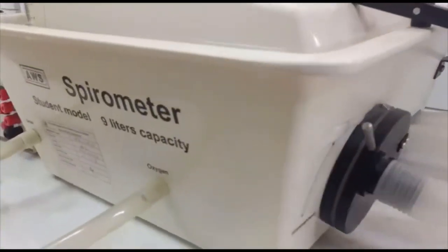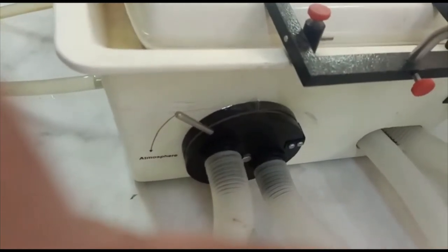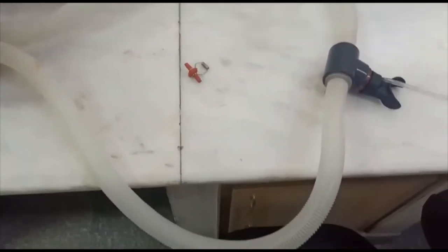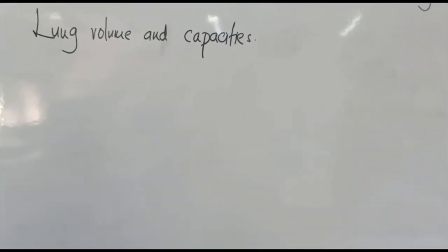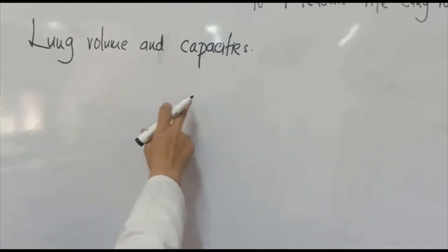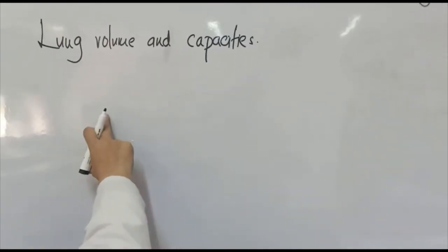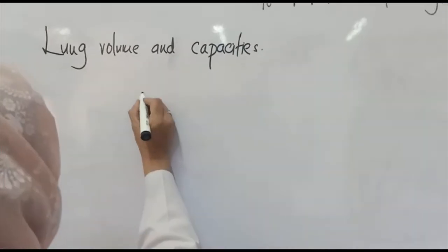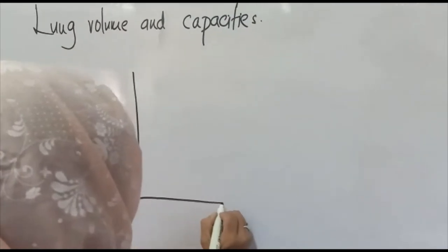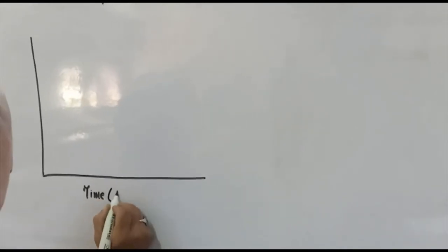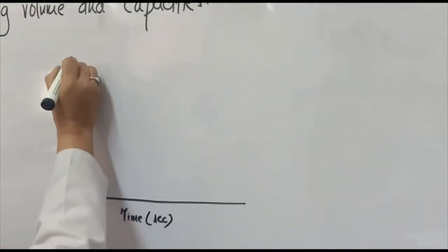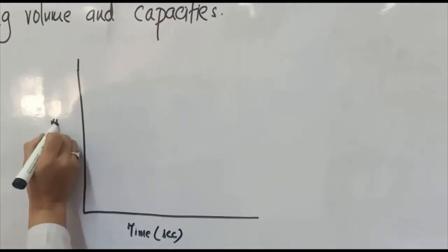The mouthpiece is connected to the spirometer through a metallic tube, which is attached with a rubber tube with the help of a T-tube. Now I will explain the normal lung volumes and capacities — what they are and how we calculate them. We take time on the x-axis in seconds and measure volume along the y-axis in milliliters.